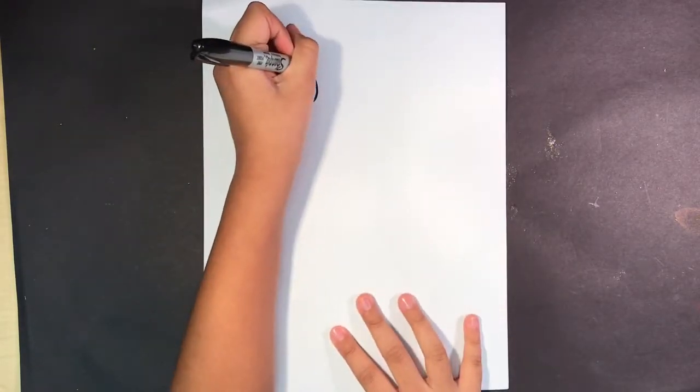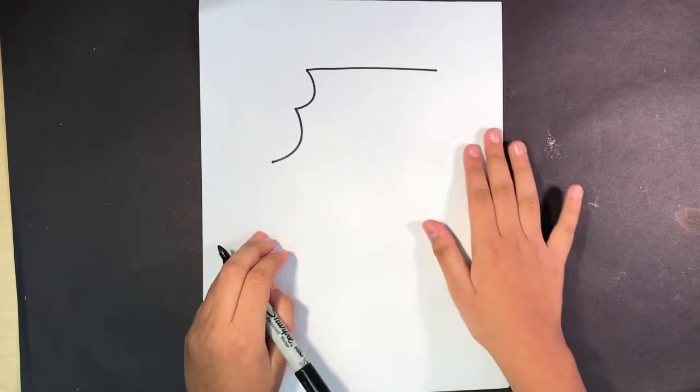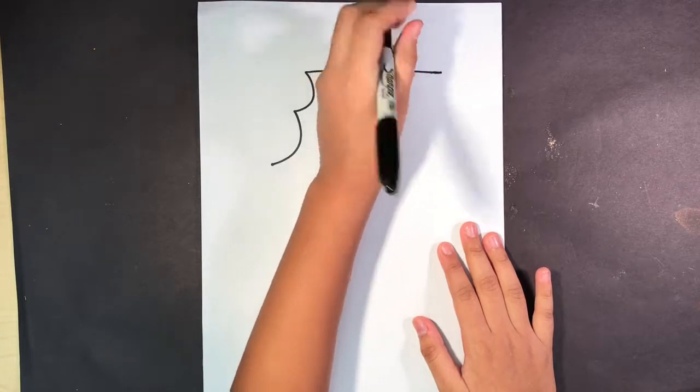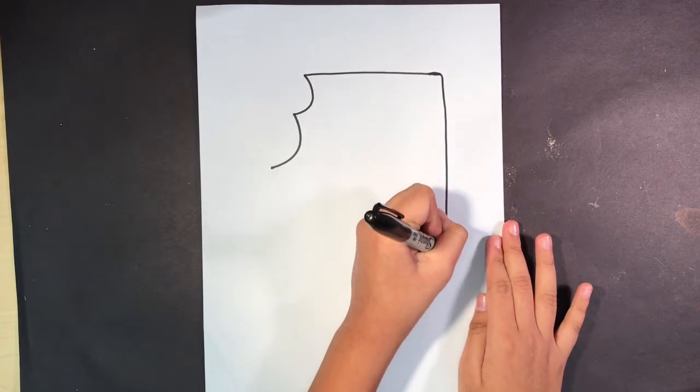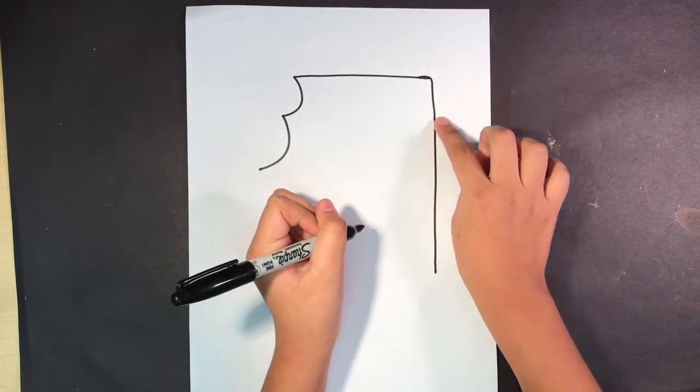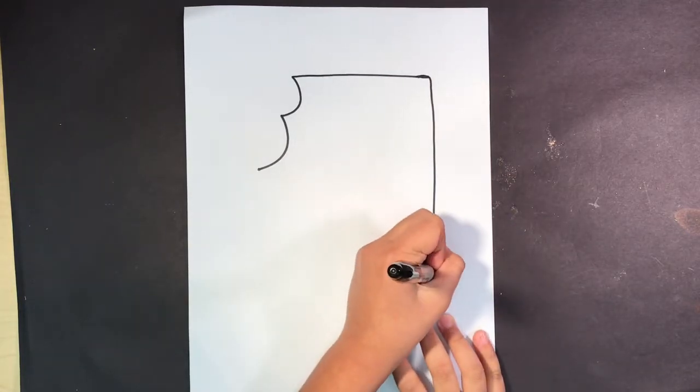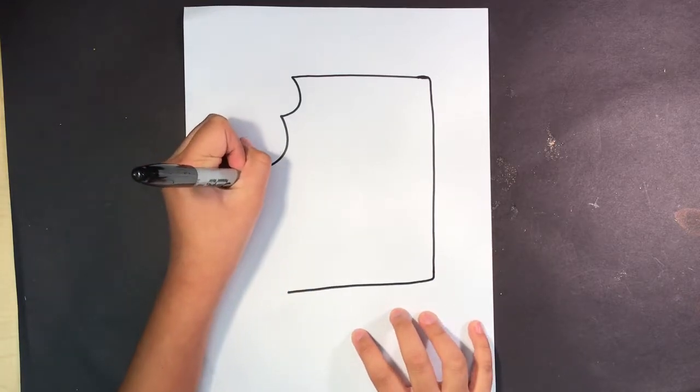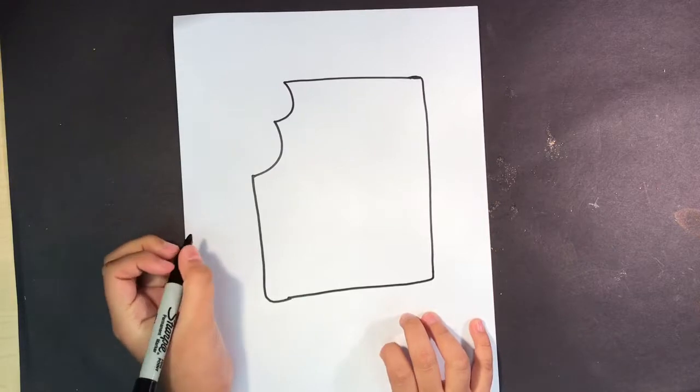And now we're gonna do kind of like a rectangle, but instead of having corners we're gonna be doing it rounded like this. You can do it as big as you want.